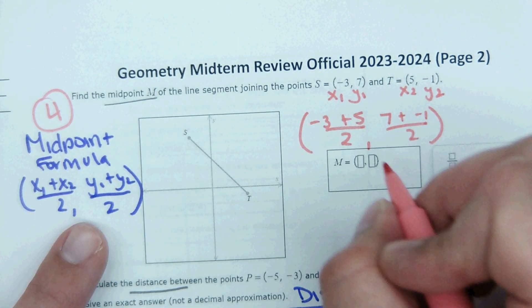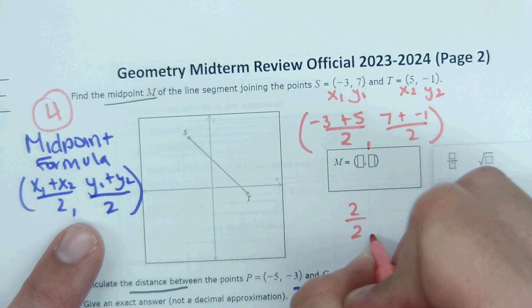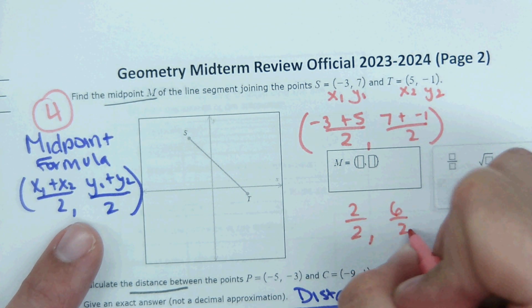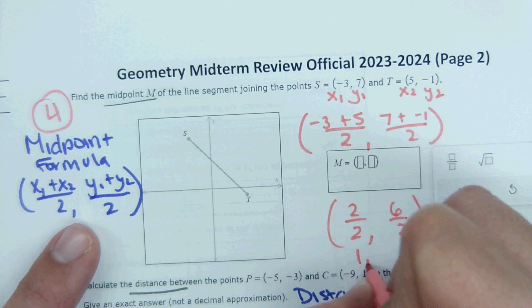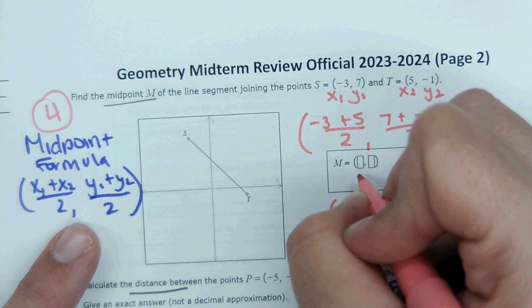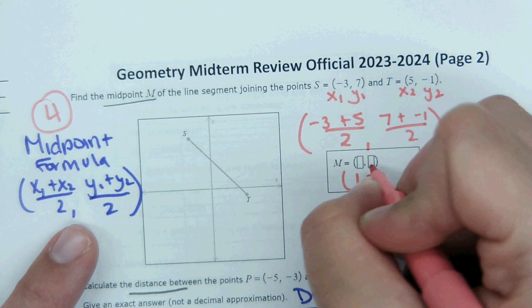And then from here, solve this. 2 over 2. We get 6 over 2. 1 and 3. And this is your answer right here that you type in the box.